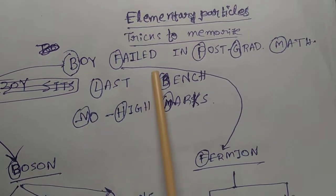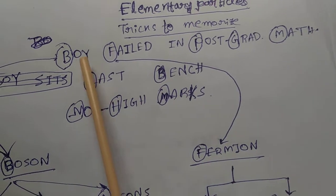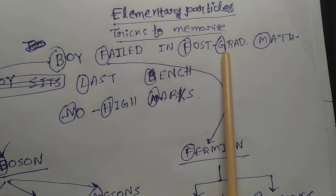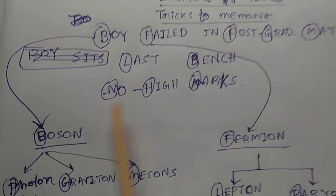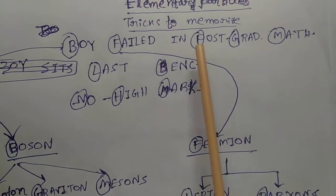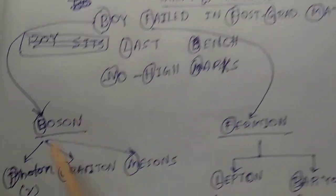This line: boy failed in post-grad math. Boy failed in post-graduation math. Boy, B for boson, F for fermions, and post-grad math, P for photons, G for graviton.